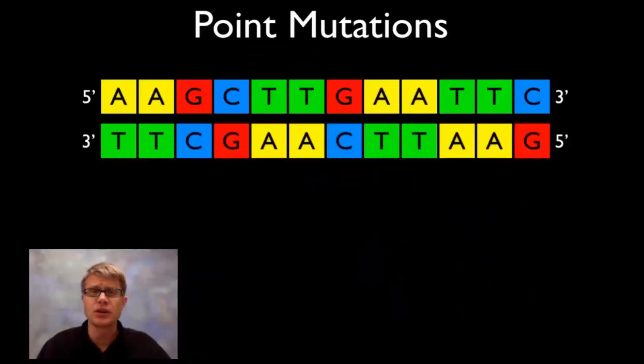Just like with the recipe and cookies, we can have mutations just at one point, called point mutations, or larger mutations where big chunks of the chromosome are being moved. Let's look at the first type of point mutation.